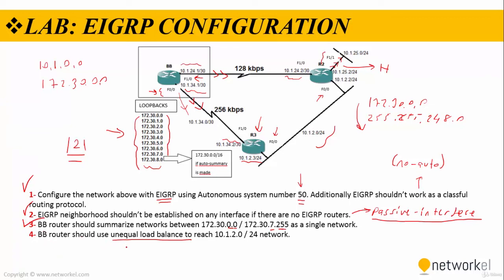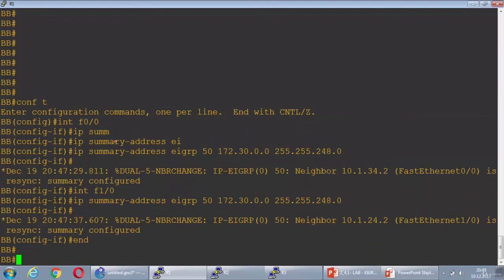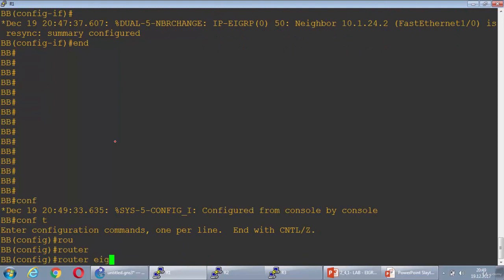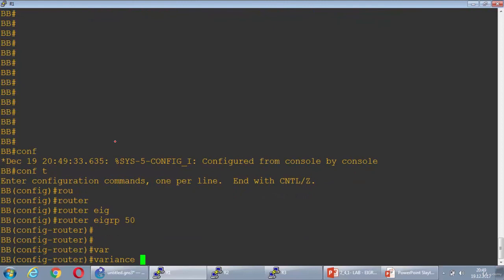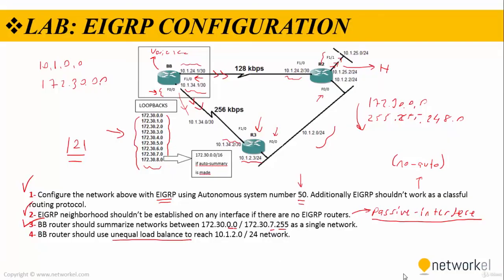Last step: BB router should use unequal load balancing to reach the 10.1.2.0/24 network. I'm gonna configure a variance command to make unequal load balancing on BB router — sending two packets from one path and one packet from the other path. On BB router: Router EIGRP 50, and I'm configuring 'variance 2'. This step is accomplished too.